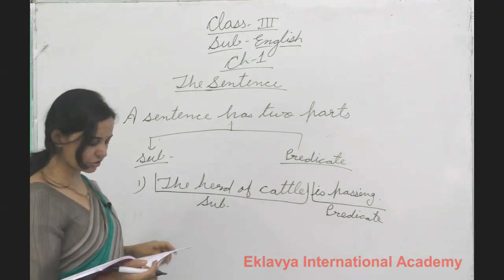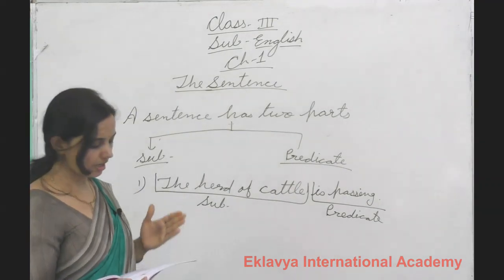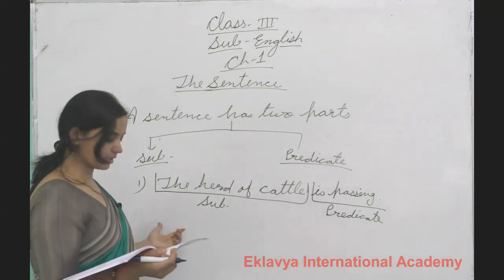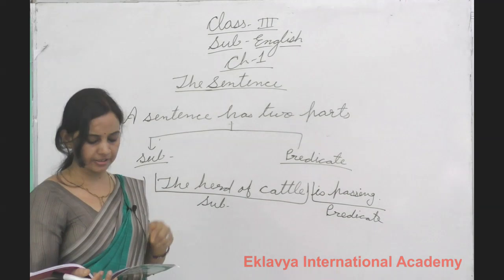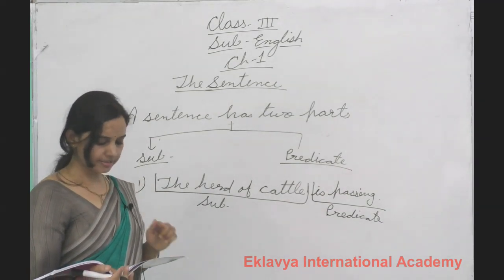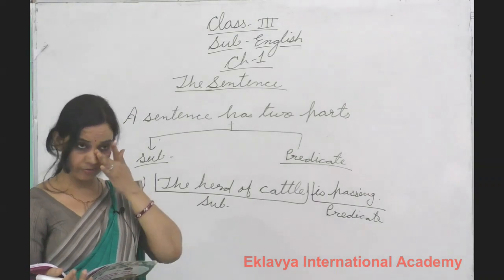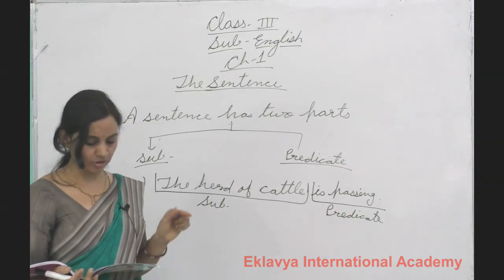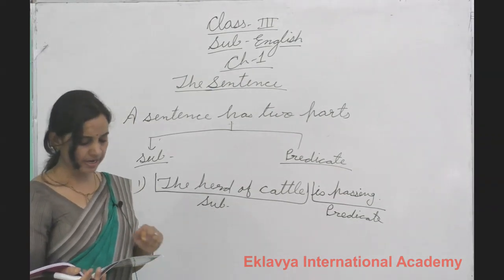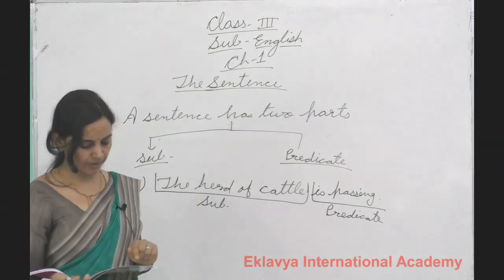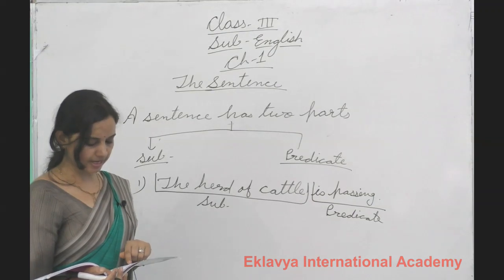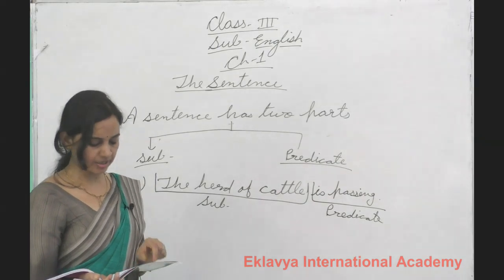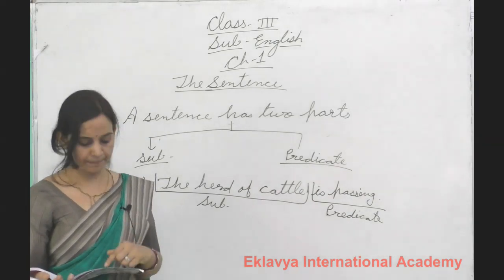'The boys were watching the match.' The boys is the subject and 'were watching the match' is the predicate. 'Sunday is the first day of the week.' Sunday is the subject because we are talking about Sunday, and 'is the first day of the week' is the predicate. 'Wisdom is better than strength.' Wisdom is the subject and 'is better than strength' is the predicate.